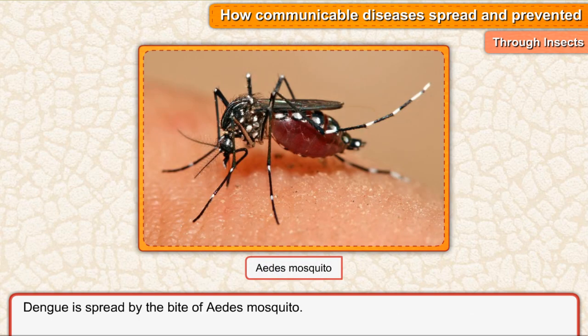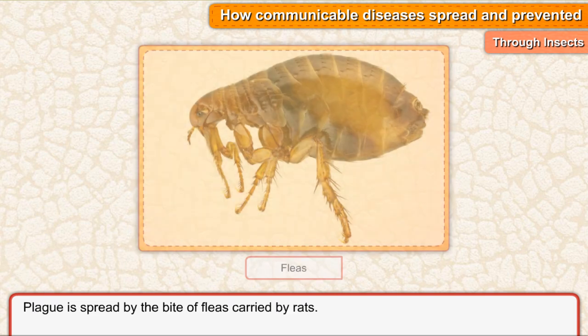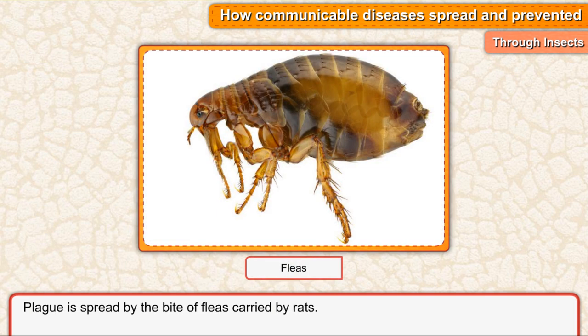Dengue is spread by the bite of the Aedes mosquito. Plague is spread by the bite of fleas carried by rats.